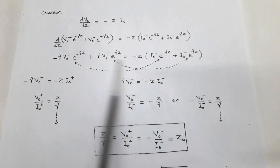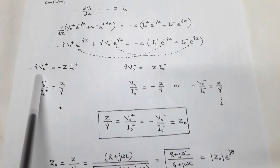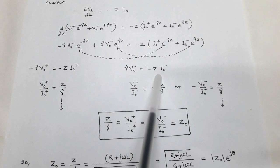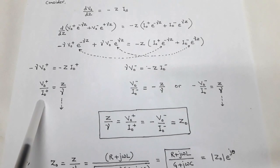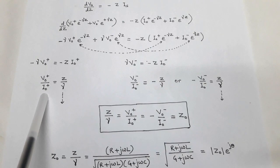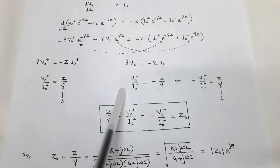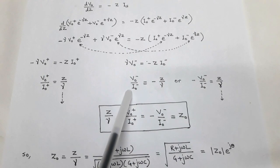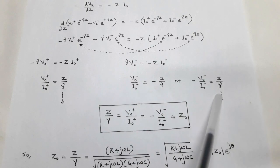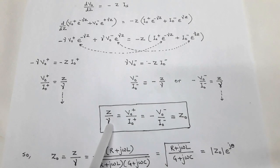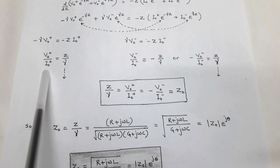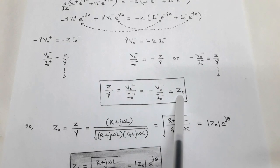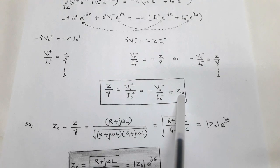We compare both sides after taking the derivative on the left side. The left side becomes −γV₀⁺·e^(−γz) + γV₀⁻·e^(+γz). Comparing exponents on both sides gives two equations: −γV₀⁺ = −Z·I₀⁺ and γV₀⁻ = −Z·I₀⁻. From these, the ratio of voltage to current gives V₀⁺/I₀⁺ = Z/γ and V₀⁻/I₀⁻ = −Z/γ, or equivalently −V₀⁻/I₀⁻ = Z/γ. This ratio Z/γ equals the characteristic impedance Z₀ of the transmission line.